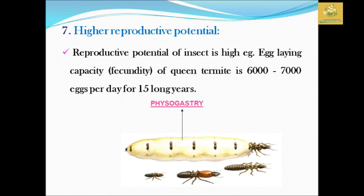Insects also have a higher reproductive potential. For example, a queen termite can lay 6,000 to 70,000 eggs per day and has a lifetime of 15 long years, giving them that much laying capacity. This is one of the important reasons for insect dominance.